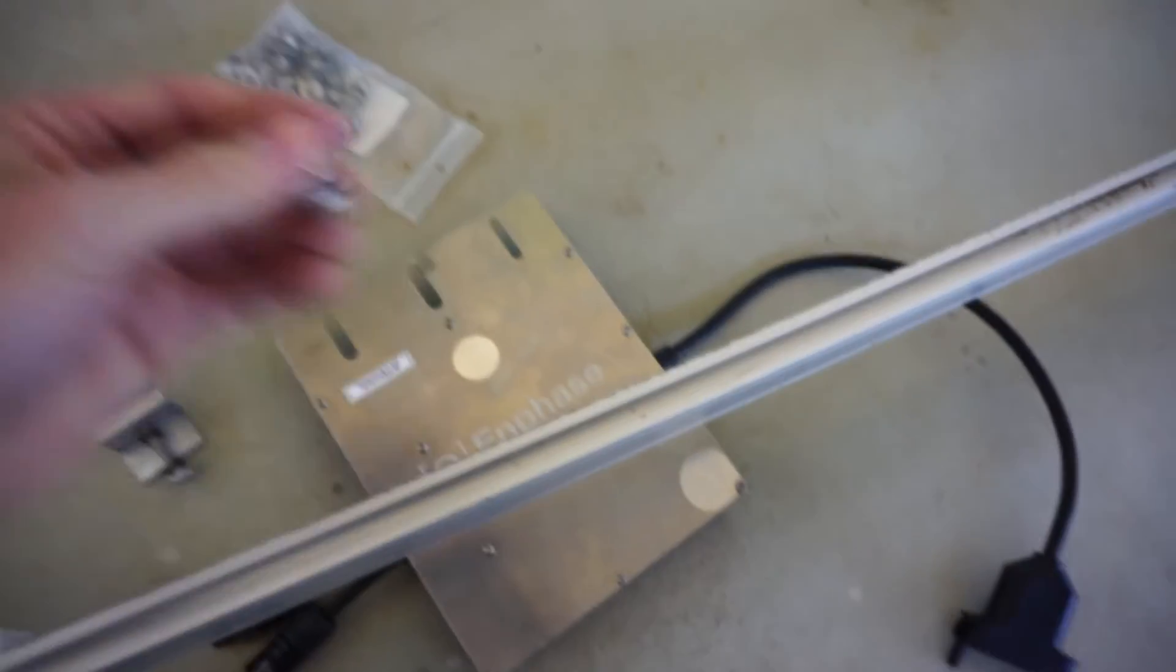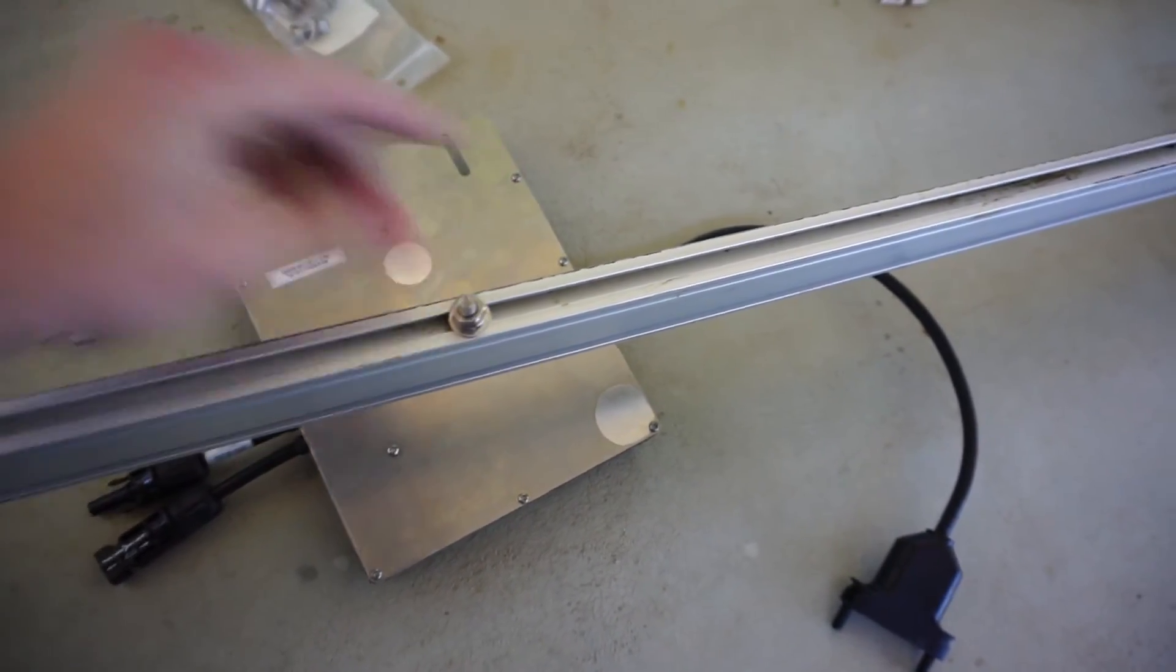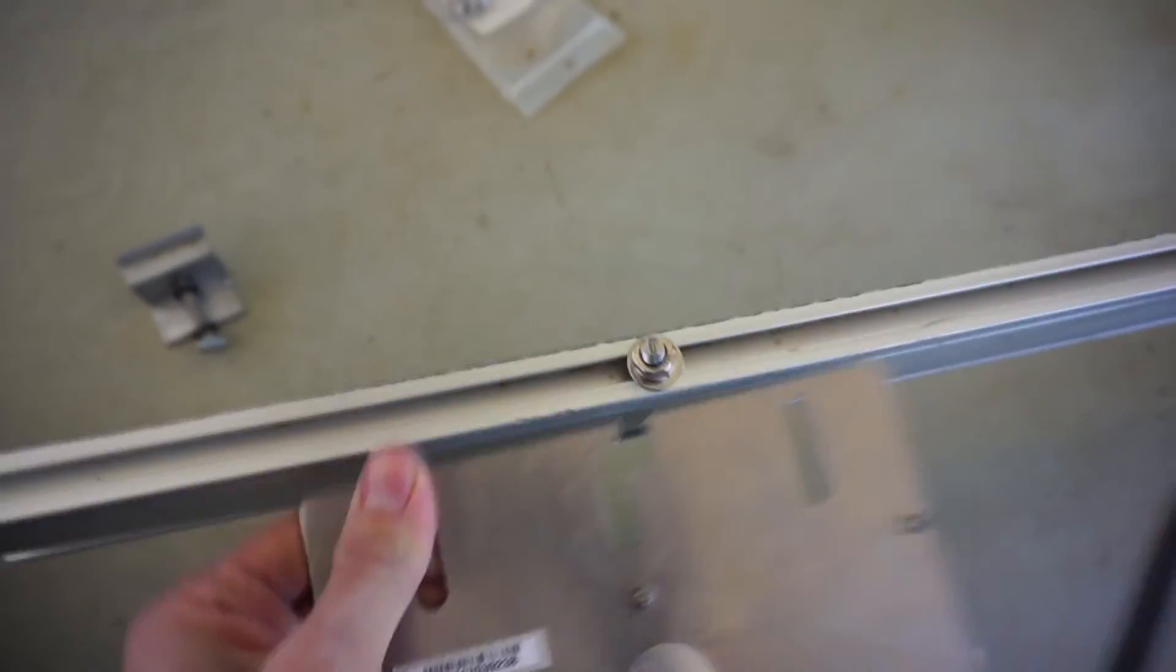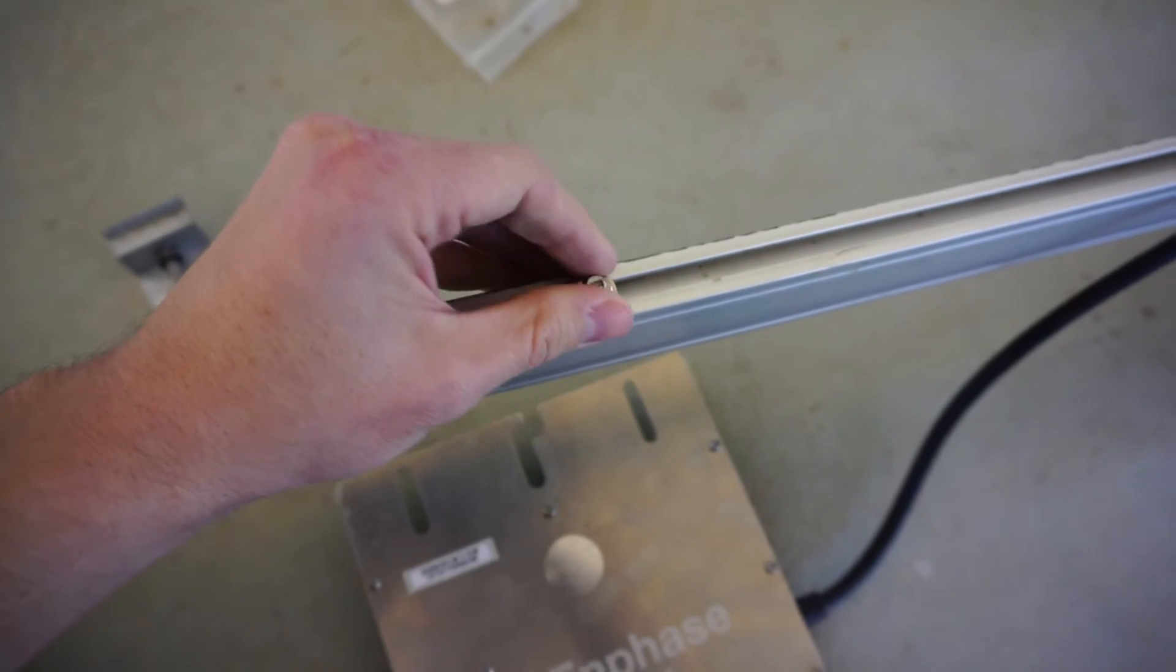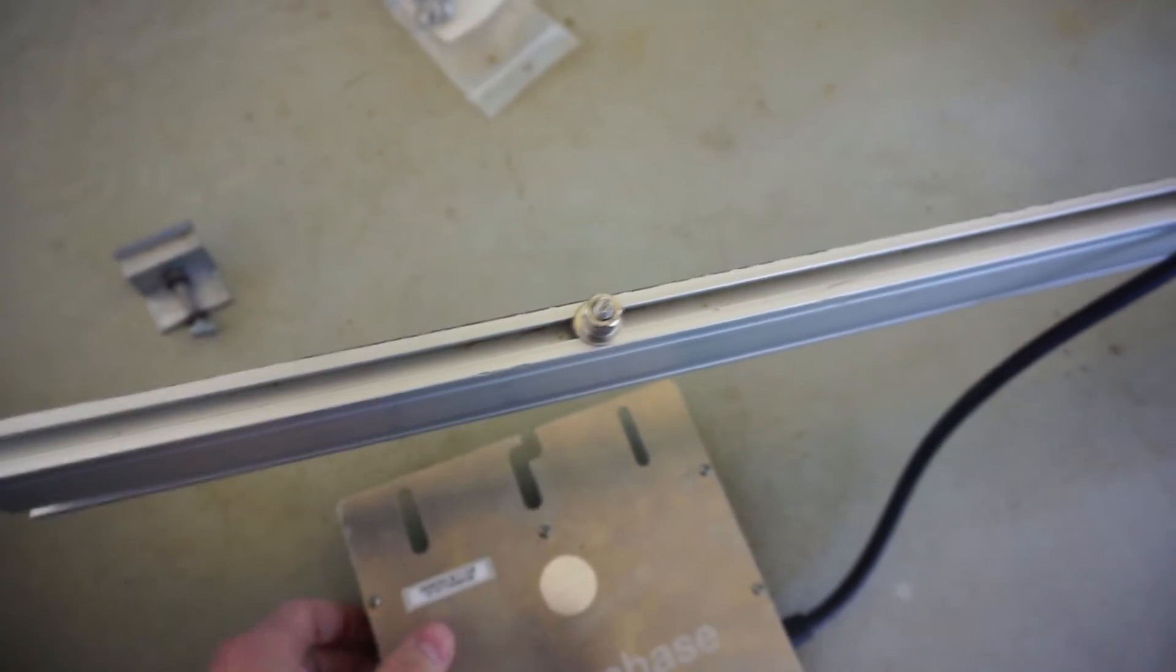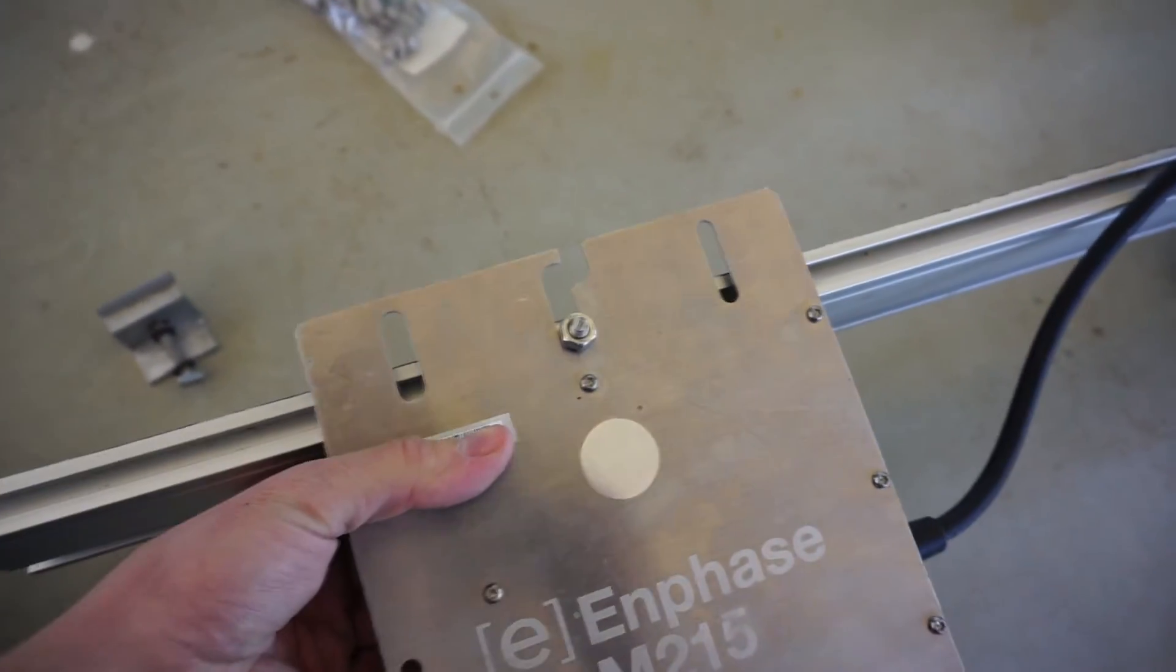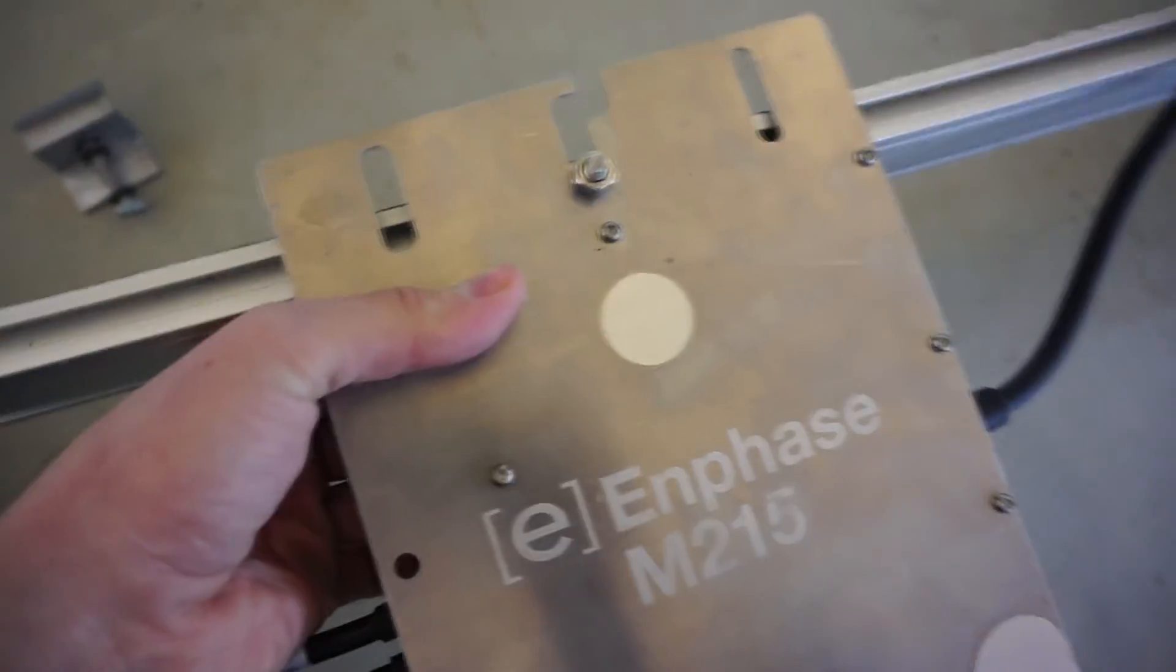Then I'll also be using Enphase microinverters and for that I have another set of T-bolts. And it's the same general idea. I'll twist that. Then all I have to do is undo the nut a little bit first. And you just slide your microinverter in with the washer on top and then tighten the bolt.